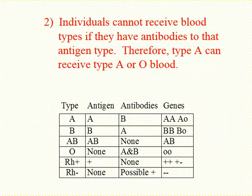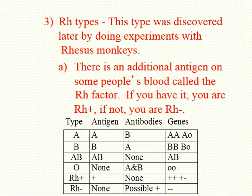The Rh type — you're not just type A, you're A positive or A negative. The positive or negative relates to whether you have another antigen on your red blood cell called the Rh antigen. Landsteiner continued to work on blood typing and by 1940 he identified another antigen found on red blood cells. Because he first found it on the rhesus monkey, he called it the Rh antigen — Rh for rhesus.